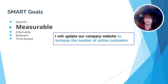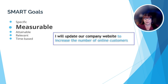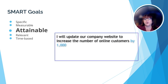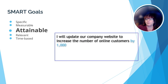M stands for measurable, meaning there must be a way to determine if the goal has been achieved — is the goal quantifiable? For example, 'I will update our company website to increase the number of online customers.' A is for attainable, meaning it can be accomplished — make the goal something that can be achieved. For example, 'I will update our company website to increase the number of online customers by 1,000.'